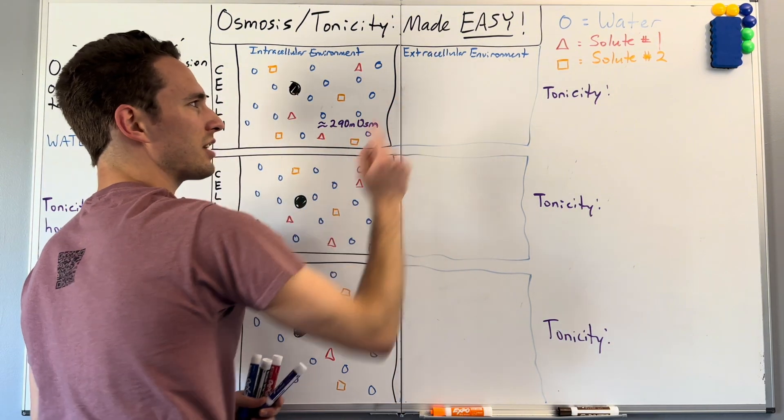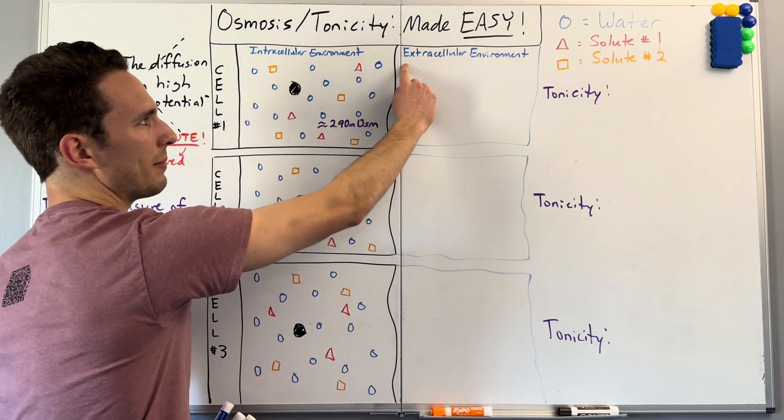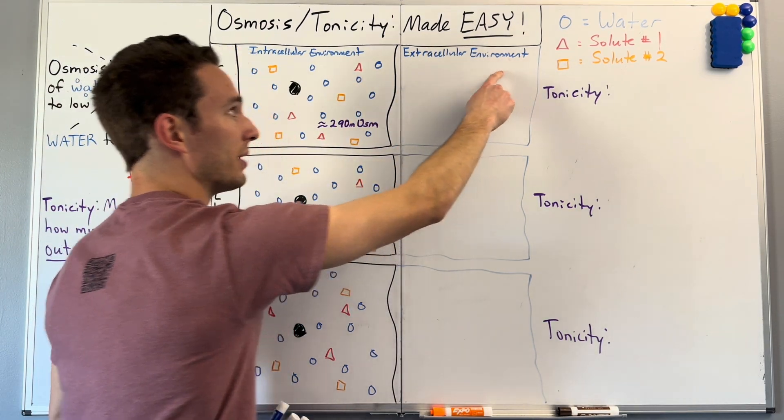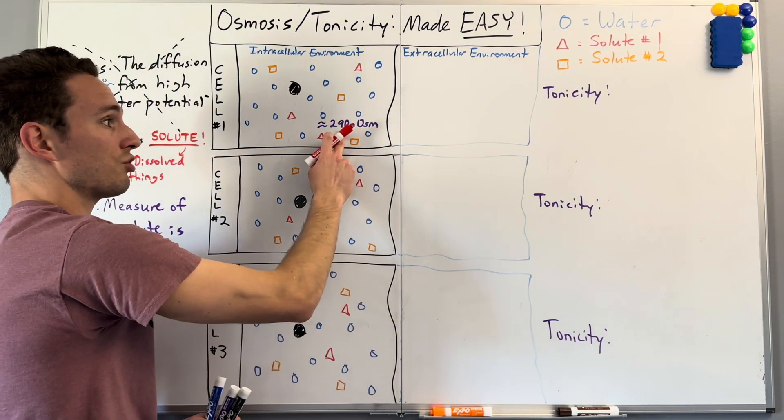So let's compare it to the outside environment that's bathing this cell. So I'm going to draw a random extracellular environment, meaning outside the cell, and we're going to see how the concentration differs.